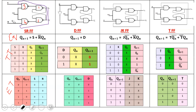Now let's talk about truth table, excitation table, and equations. We can derive equations from the truth table. But first, let's get the characteristic equation, because it is easy to memorize. SR flip-flop: Qn+1 = S + R̄·Qn. D flip-flop: Qn+1 = D. JK flip-flop: Qn+1 = J·Q̄n + K̄·Qn. T flip-flop: Qn+1 = T·Q̄n + T̄·Qn.